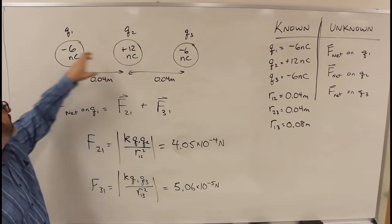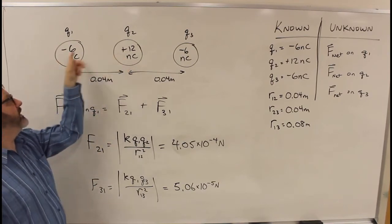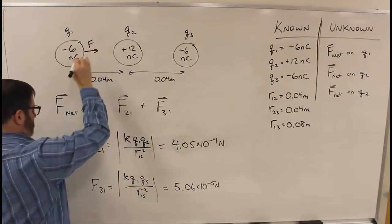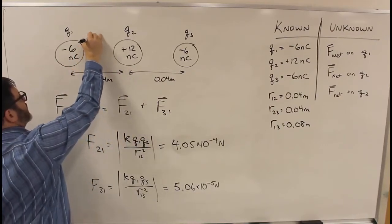F2,1, the force of this one on that one. This one's positive, that's negative. Opposites attract. So F2,1 goes that direction.